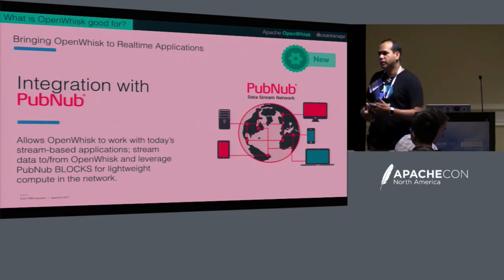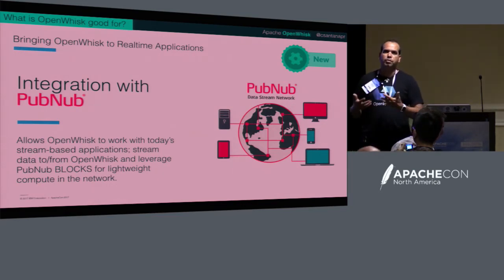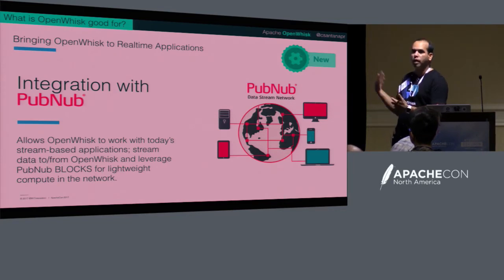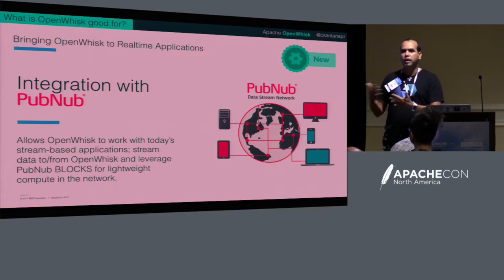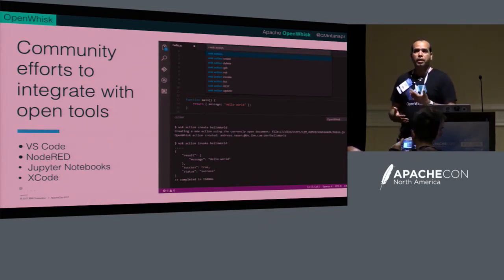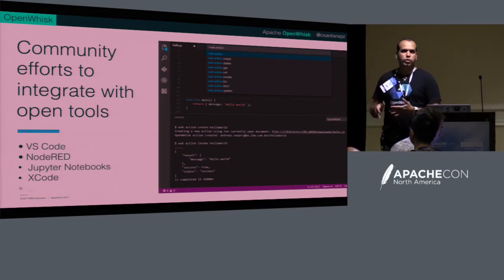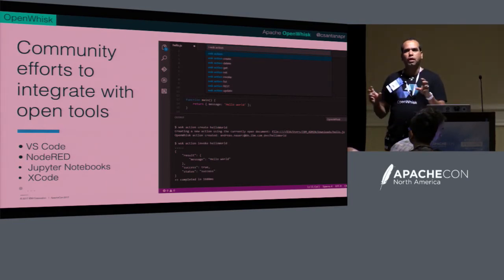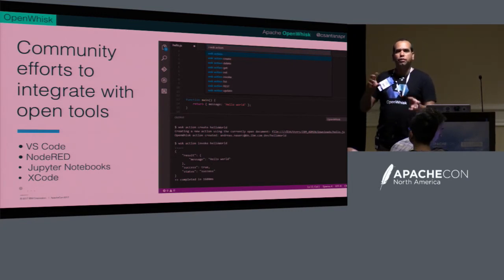PubNub — if you have a chat application or data stream service — did integration using the REST APIs. Nothing specific about Bluemix; you can connect PubNub to an instance of OpenWhisk running on your own VMs. In terms of community developer tooling, that's the area we need help to grow the user base. We have an IDE plugin for VS Code so instead of the CLI you can use the IDE to create and invoke actions. We have Node-RED — if you're doing IoT, some people use Node-RED to create workflows and from those workflows you can define and invoke actions at certain points.